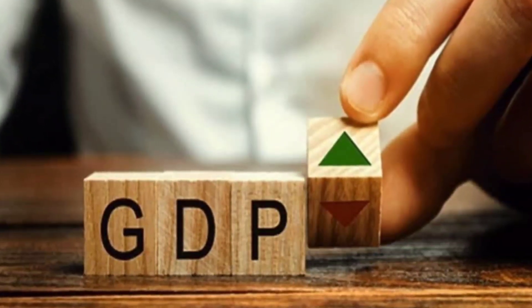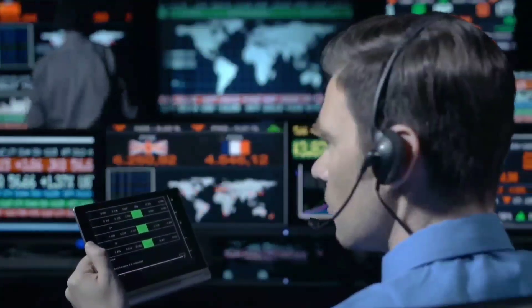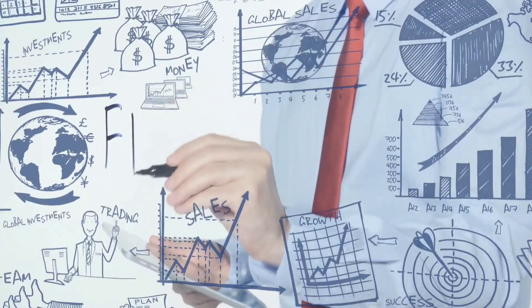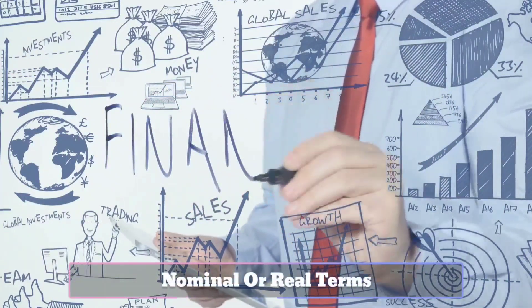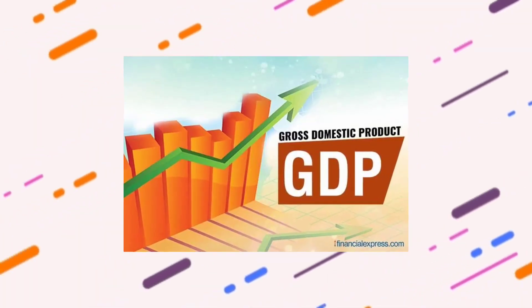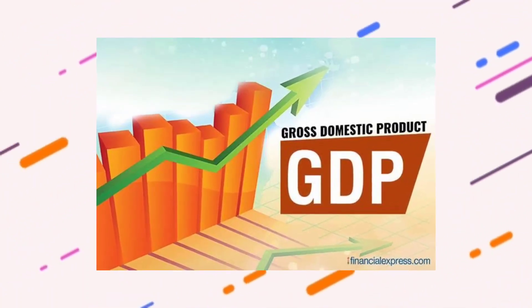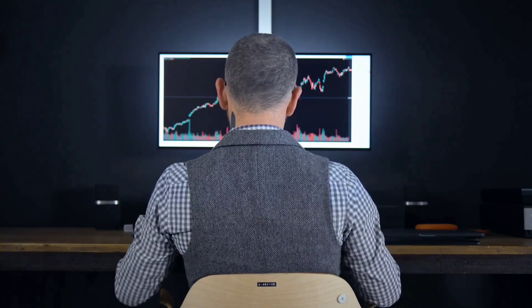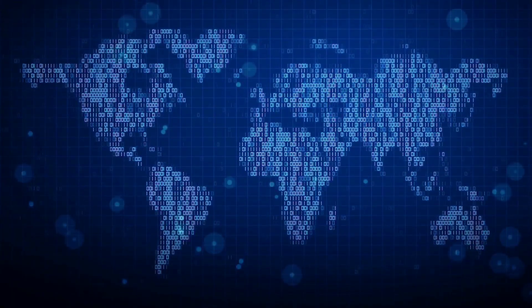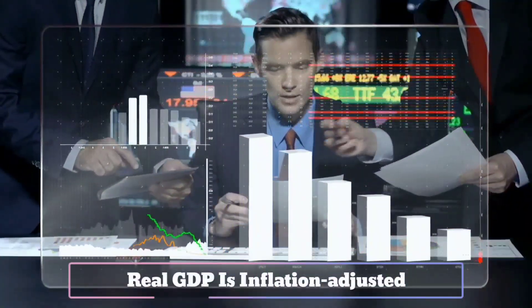Yearly GDP totals are widely used to compare national economies by size. Policymakers, financial market participants, and CEOs are more interested in changes in GDP over time, expressed as an annualized rate of growth or contraction. GDP can be defined in either nominal or real terms. Nominal GDP uses the value of goods and services as collected and represents changes in aggregate pricing. It is used for comparing different quarters within the same year. Real GDP is used for comparing two or more years, as it removes the influence of inflation so the comparison can focus purely on volume. Real GDP is inflation-adjusted, meaning it accounts for changes in market price levels to estimate changes in actual output.